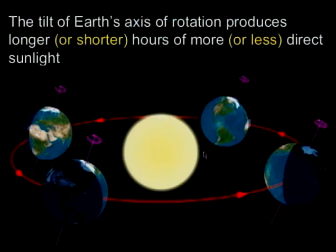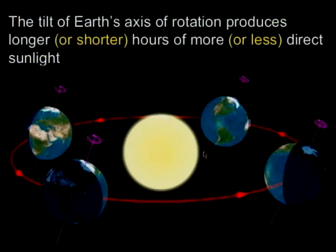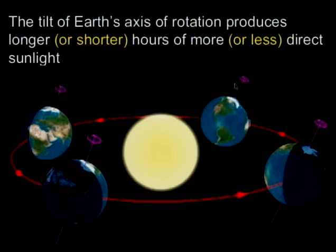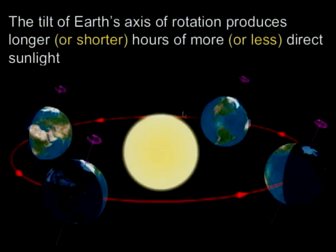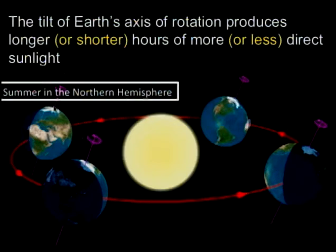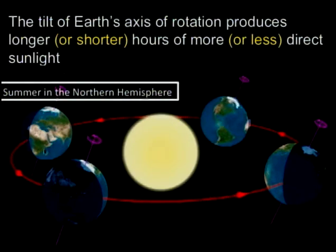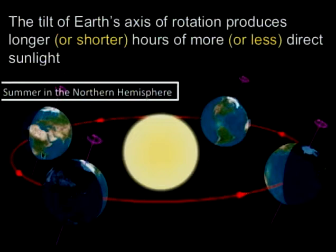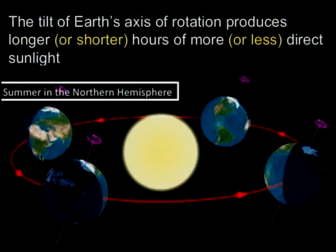What causes the seasons? It's the tilt of Earth's axis of rotation with respect to its orbit around the Sun. This image is not to scale, but you'll notice Earth is rotating and its rotation has an angle with respect to its orbit. At this position, a lot of light is hitting the northern hemisphere directly, while the light hitting the southern hemisphere is at a bigger angle and hits for a smaller amount of time — so it is summer in the northern hemisphere.